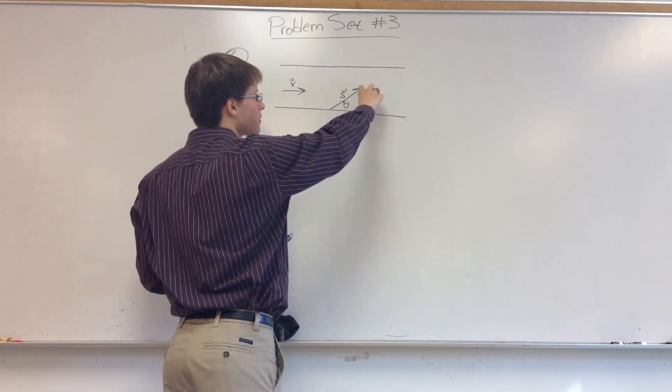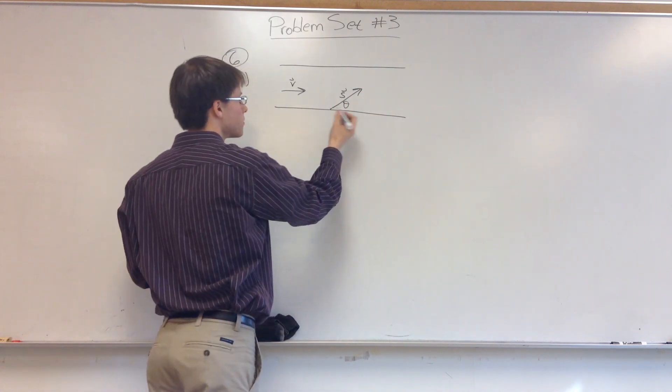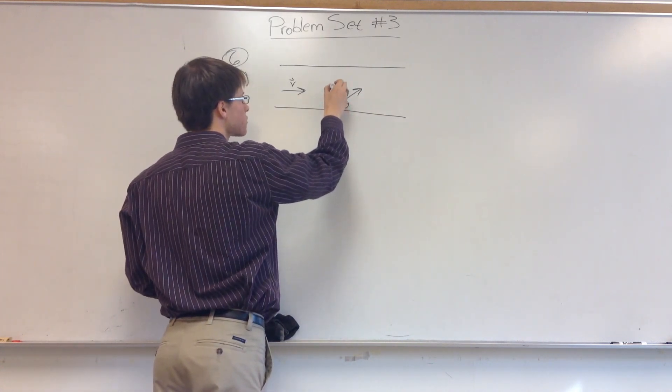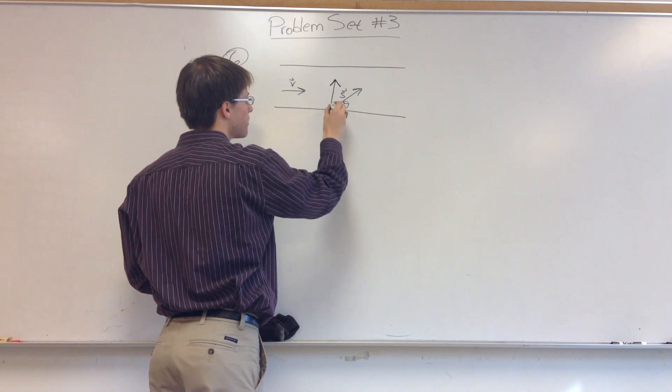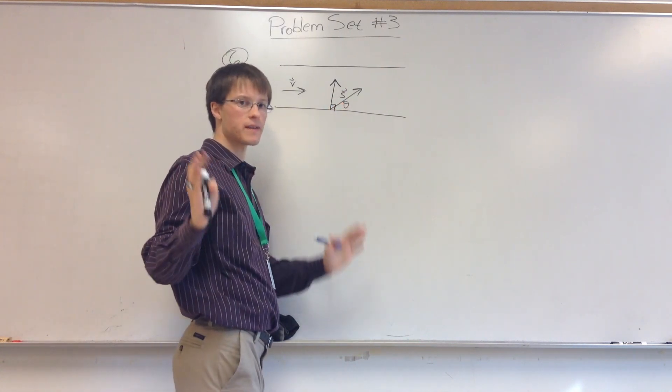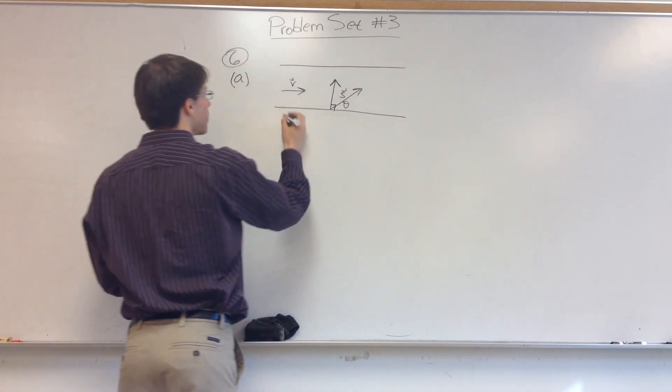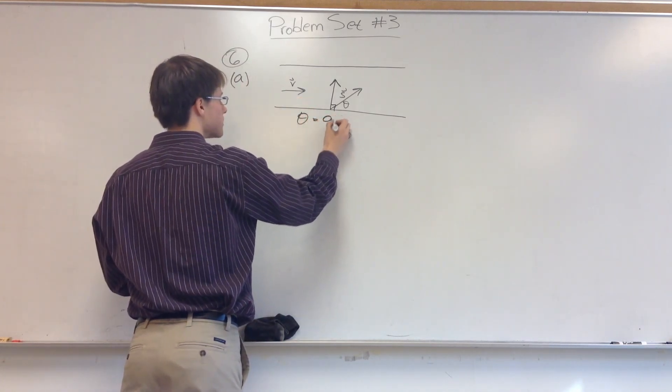I can make this y component greater, because some of this vector is contributing to the x direction. So the optimal solution is if he swims straight across with theta equals 90 degrees, because then I have no x component and the entire vector is going in the y direction. So your answer to part A is that theta is equal to 90 degrees.